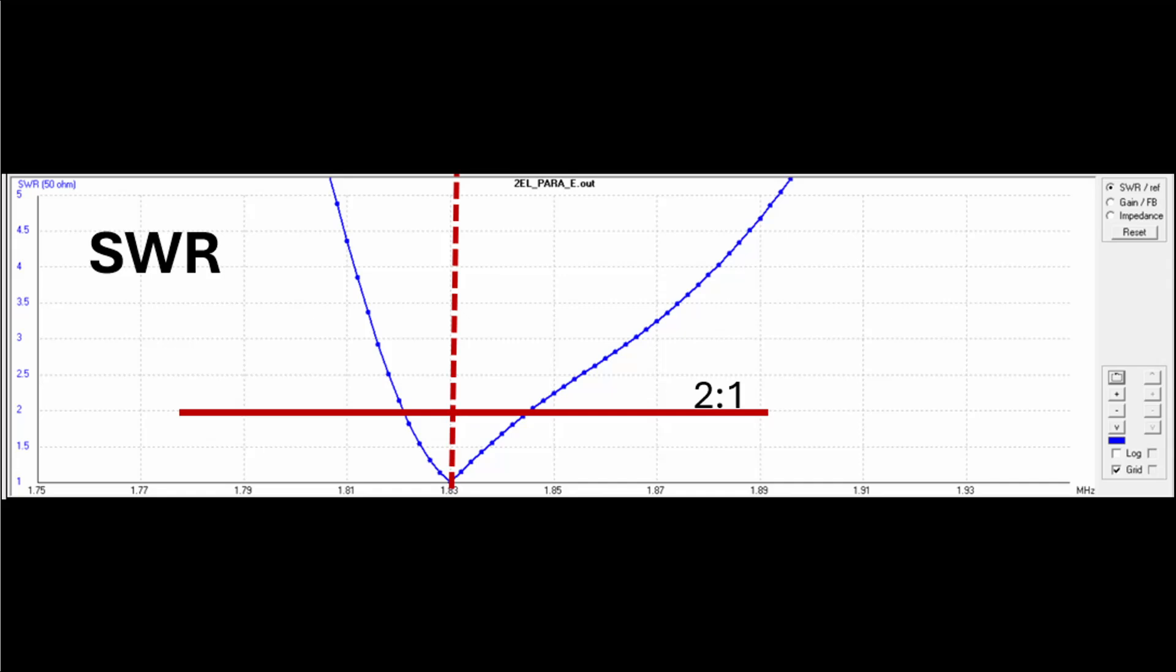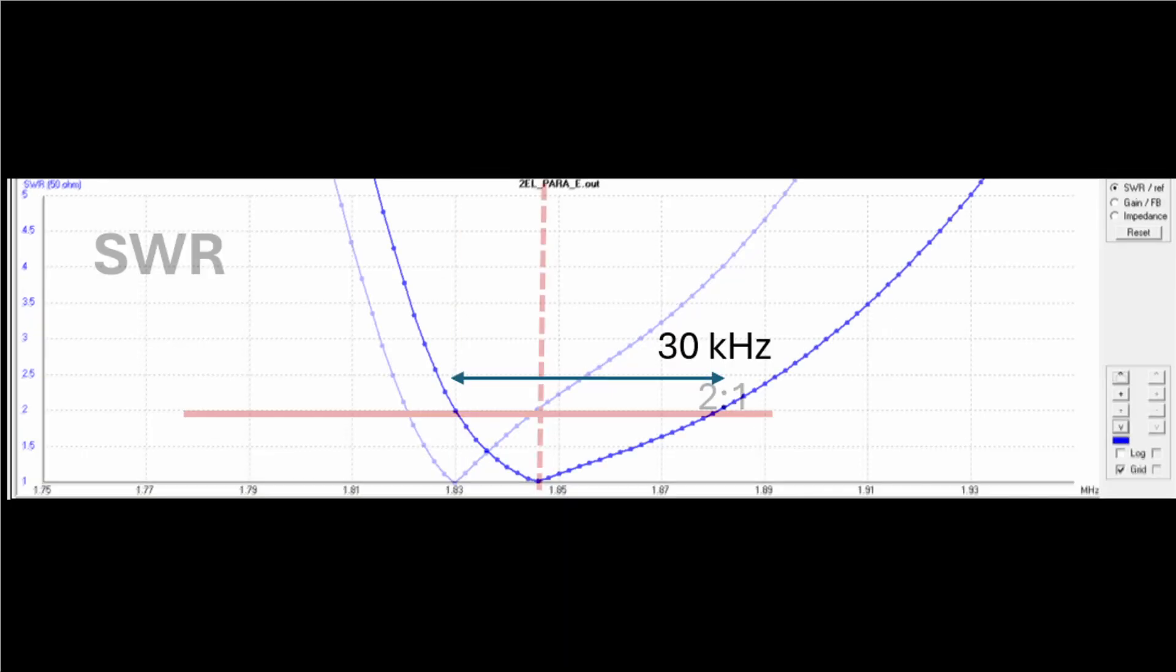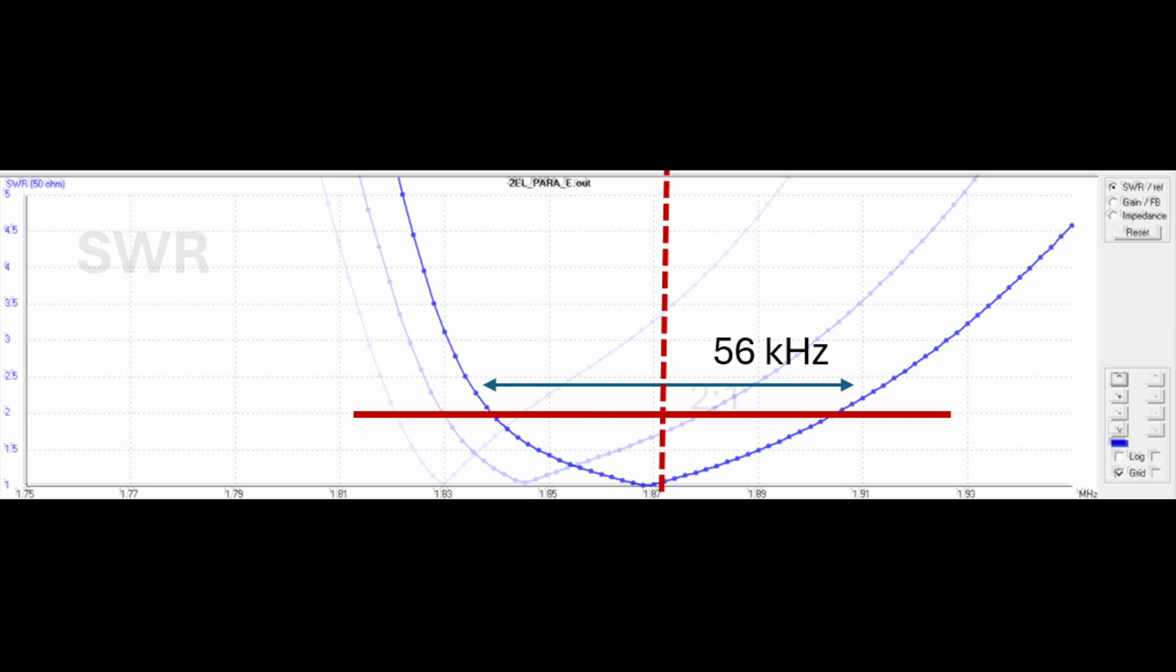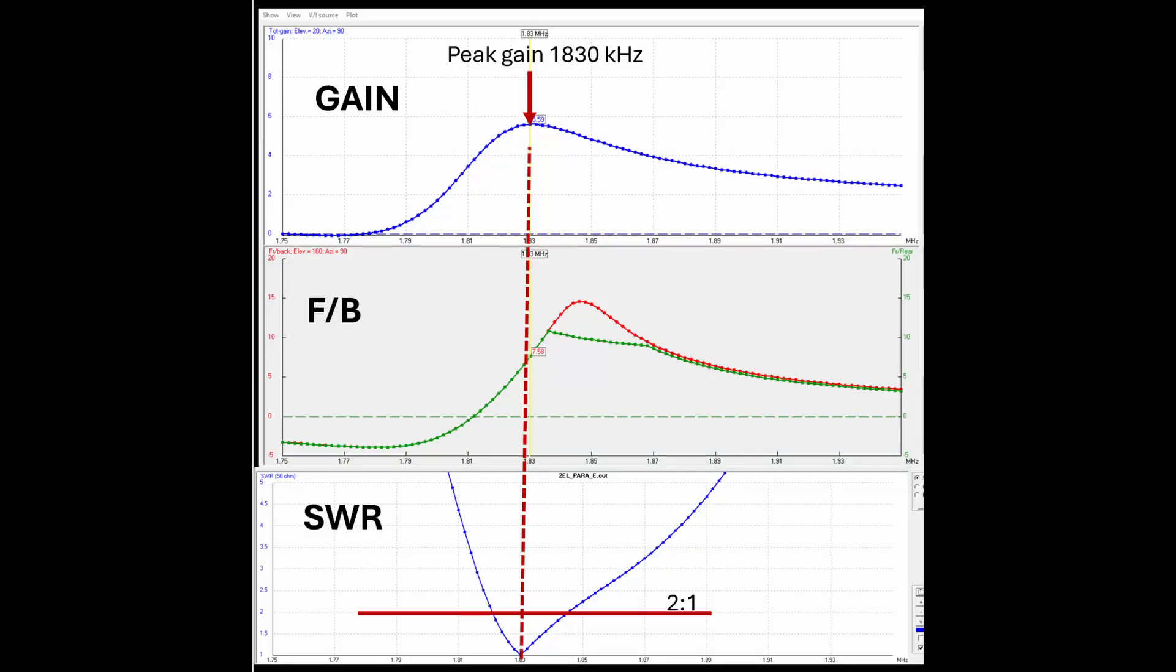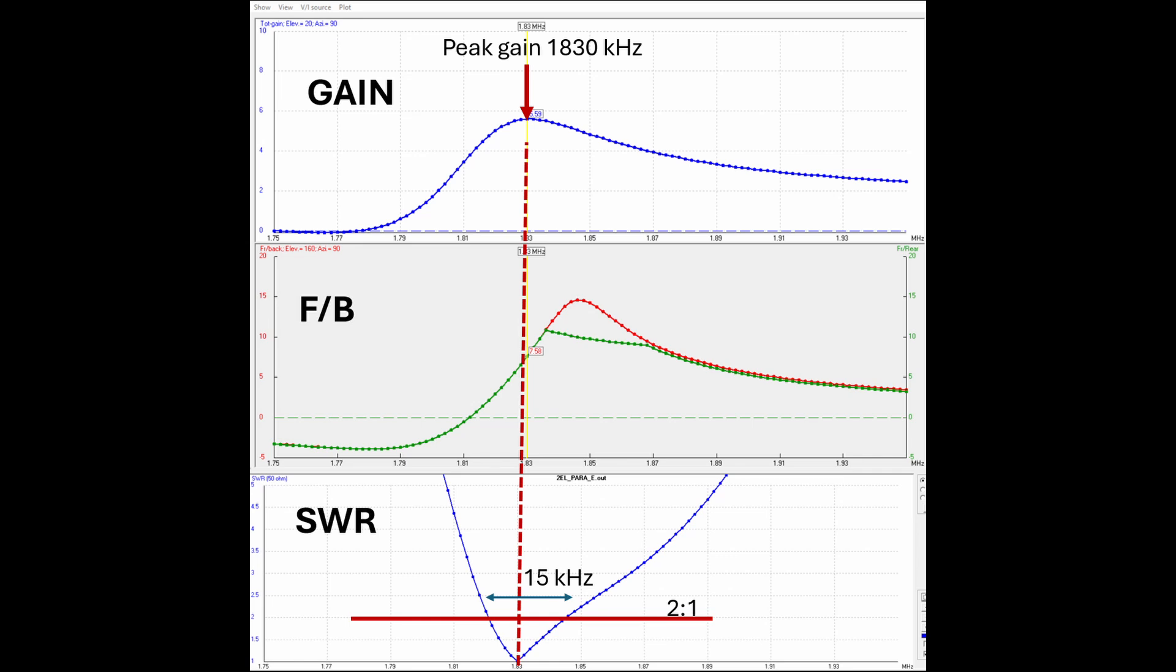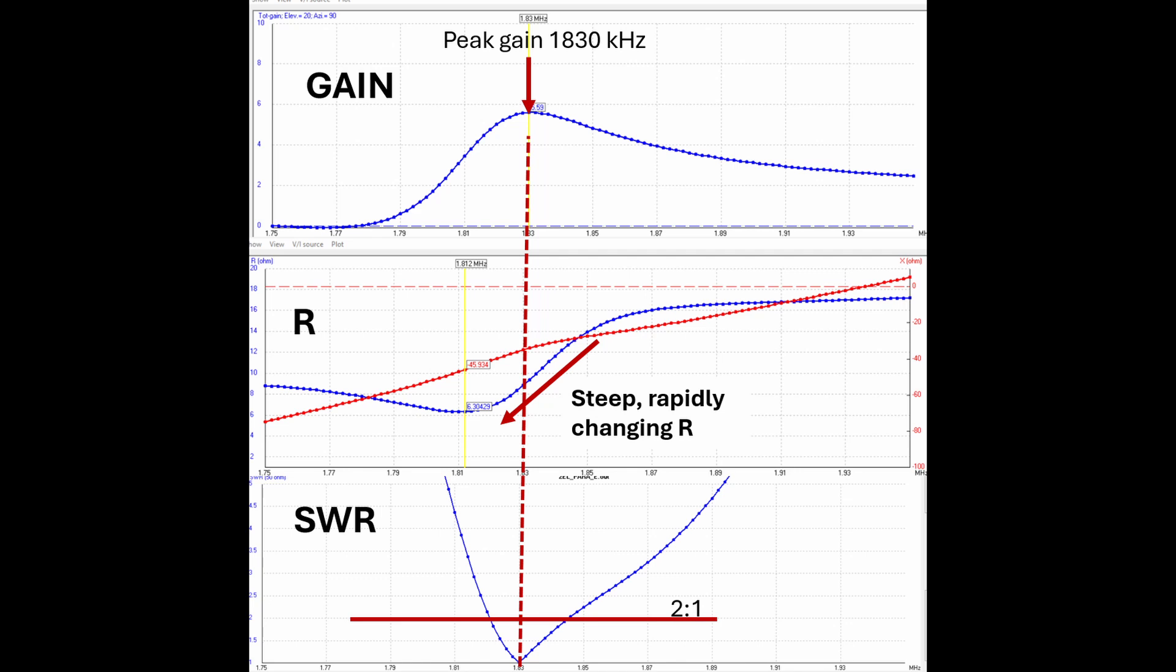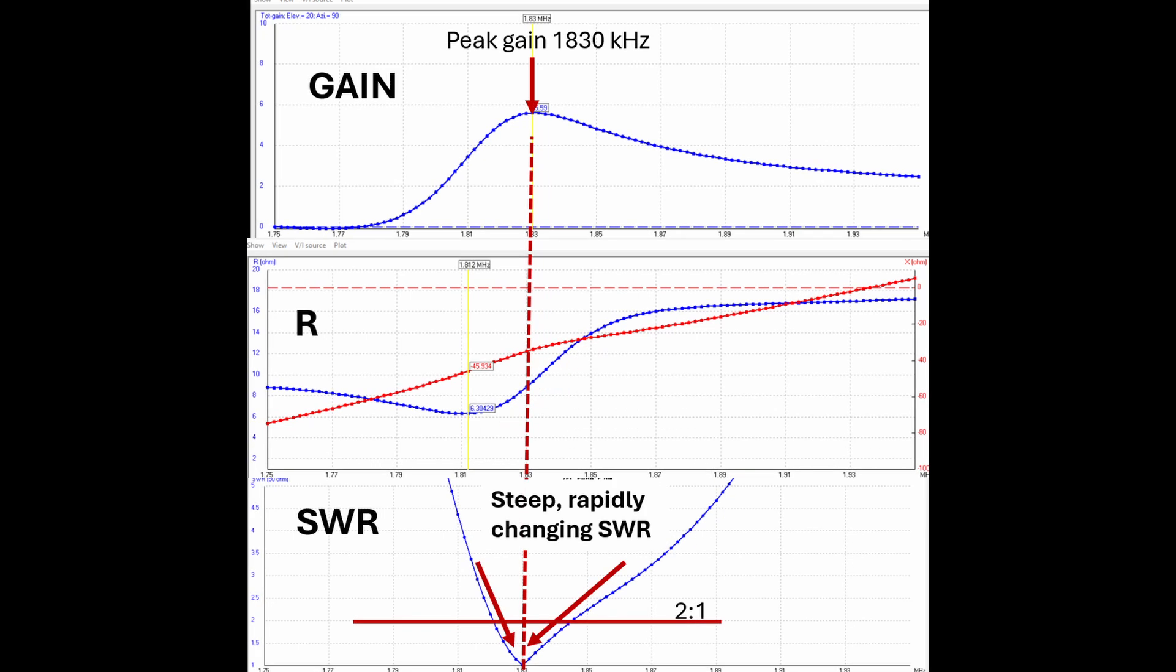However, no matter how you match the feed line to the driver, the SWR bandwidth of your two-element array is very sensitive to where, that is, what frequency you tune the driver. Okay, let me explain this. Let's say in our 4NEC2 model, we want to tune the driver for one-to-one at max gain here at 1830 kHz. All right, if we do that, we get this really narrow 15 kHz, 2-to-1 SWR bandwidth. The reason it's so narrow is because as we approach this maximum gain point, that resistance curve is very steep as we crash down the curve to the R dip caused by the parasitic. That's why the SWR is steep and narrow. The impedance is rapidly changing.